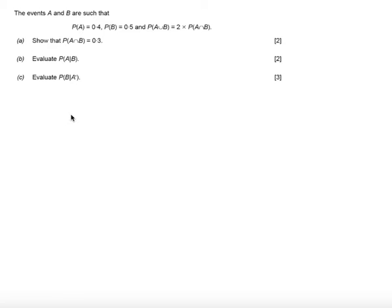In this question we're told the events A and B are such that probability of A is 0.4, probability of B is 0.5, and probability of A union B is 2 times the probability of A intersect B.